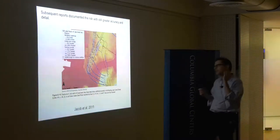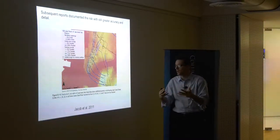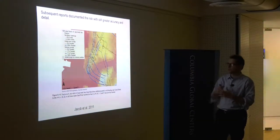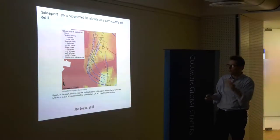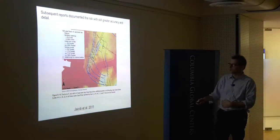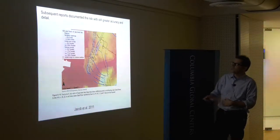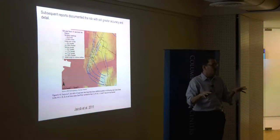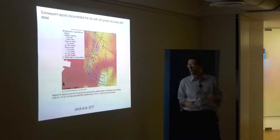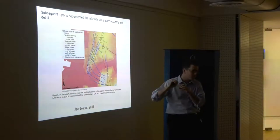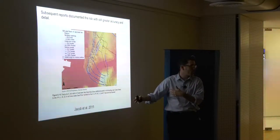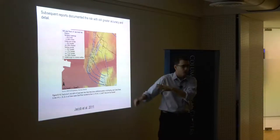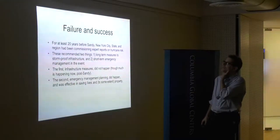Eighteen years later, the MTA built a new station in exactly the same place and totally ignored that report. Later, colleagues at Columbia — Claus Jacob at Lamont and others in the engineering school — mapped in even more detail exactly which subway tunnels would fill up with water, how quickly, and by how much. They expected it might happen after a century of sea level rise; they didn't expect it to happen right away. But what they predicted happened almost exactly in Sandy.